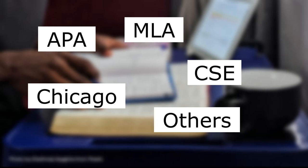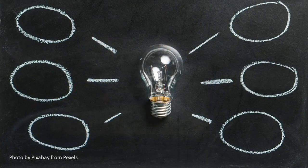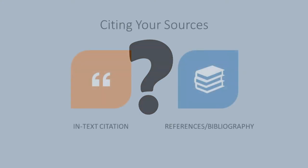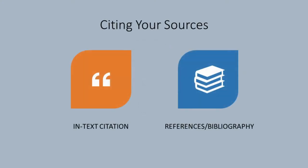While each is slightly different, the main purpose is always the same: to share the source of your ideas when they come from another person. One very important thing to note is that proper citing involves two elements: an in-text citation and a reference. We'll take a quick look at each of these elements so that regardless of what specific style you're asked to use, you'll have a good idea of what you need to be doing.